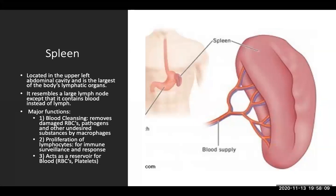The spleen is very important as a lymphoid organ. It's located in the upper left abdominal cavity and is the largest of your body's lymphatic organs. It resembles a large lymph node, except that it will contain blood instead of lymph. Its major functions are to clean the blood, remove damaged red blood cells, remove pathogens, and remove anything else undesired by the macrophages. Your spleen is also important for the proliferation of lymphocytes for immune surveillance and response, and it will act as a reservoir for blood, red blood cells, or platelets.